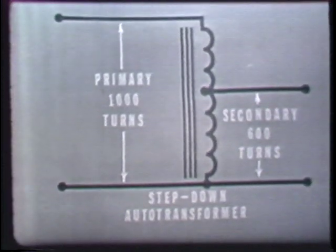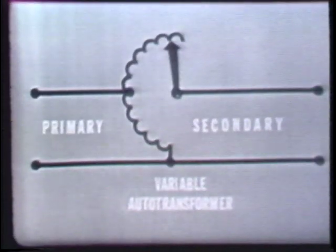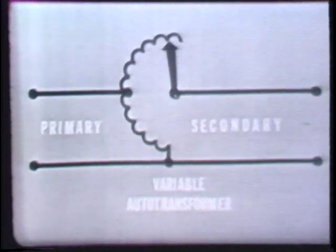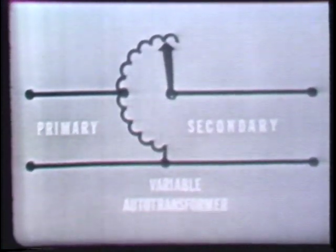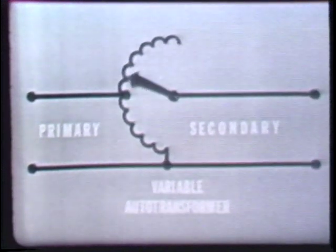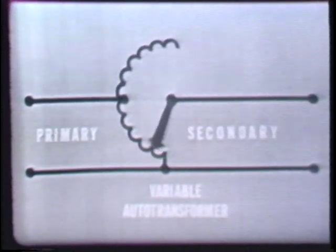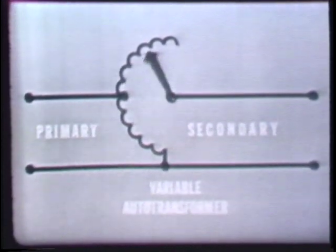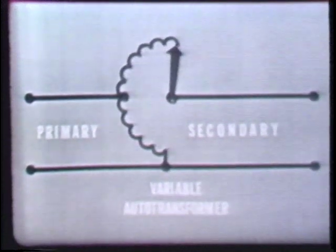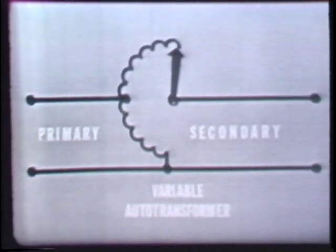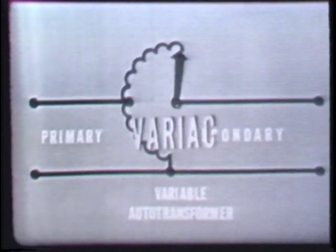Auto transformers are sometimes constructed with a sliding contact. When a control is varied on the transformer case, the secondary voltage can be varied from the maximum voltage induced in the winding down to 0 volts. This type of transformer is called a variable auto transformer — however, it's probably most commonly known as a variac. Auto transformers are normally used in power circuits, but they may also be designed for audio or RF use.